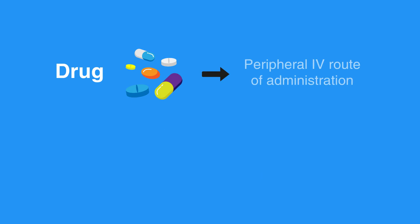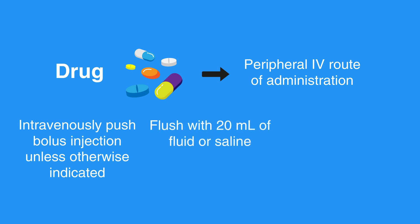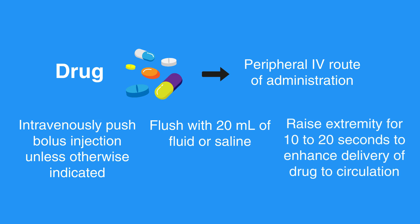If a drug is given via peripheral route of administration, you should intravenously push a bolus injection unless otherwise indicated, flush with 20 ml of fluid or saline, and raise the extremity for 10 to 20 seconds to enhance delivery of the drug to circulation.